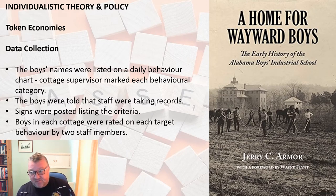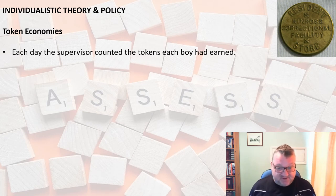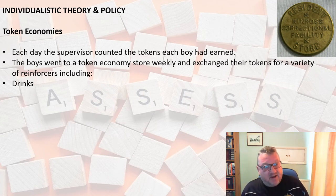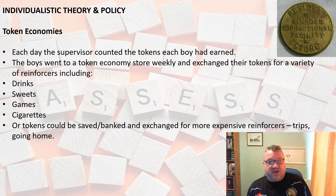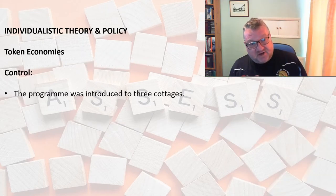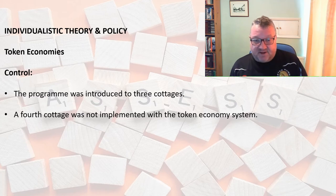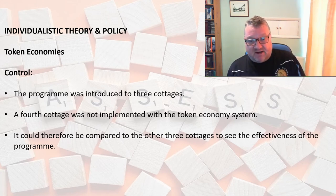Boys in each cottage were rated on each target behaviour by two staff members. Each day the supervisor counted the tokens each boy had earned — if you behaved well, you got a token; if you behaved badly, you didn't. The boys went to a token store weekly and could exchange their tokens for reinforcers such as extra drinks, sweets, games, or cigarettes. They could also save tokens and bank them to exchange for more expensive reinforcers such as trips or going home. A control was included: three cottages took part in the token economy, but the fourth did not, allowing comparison of effectiveness. Data was collected over 14 months.